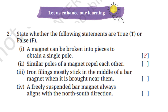Second: Similar poles of a magnet repel each other — true, like poles repel and unlike poles attract. Third: Iron filings mostly stick in the middle of a bar magnet — false, iron filings mostly stick at the ends, not the middle. Fourth: A freely suspended bar magnet always aligns with the north-south direction — true, this is a key property of magnets used in compasses. So statements one and three are false, and two and four are true.